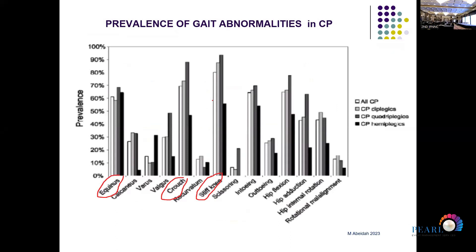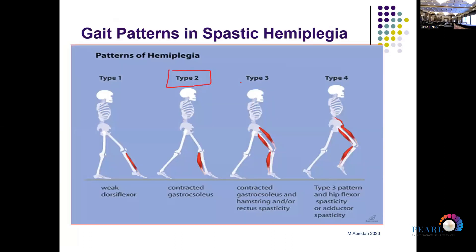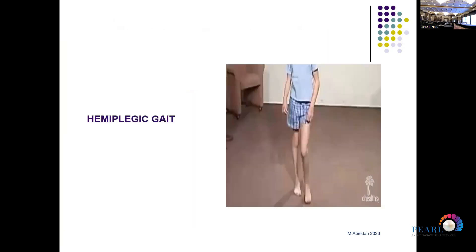Many efforts have been made to classify the different types of gait in children with cerebral palsy to assist in diagnosis and intervention decisions. For example, in hemiplegia, four types of hemiplegic gait pattern are described. Type one — quite rare — involves weak dorsiflexors and foot drop. The commonest is type two, with spasticity of the gastrocnemius-soleus. With more muscle involvement comes greater severity, up to the most severe type involving the vasti muscles as well as gastrocnemius-soleus, called 'jump gait.'